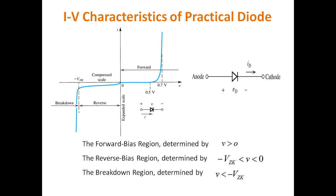Now let's look at the practical VI characteristics. A practical diode does not work ideally. In the forward characteristics, because of the diode's internal resistance, the diode comes into conduction after the cut-in voltage, which is 0.5 volts. As soon as the input voltage exceeds 0.5 volts, the diode starts to conduct and the current increases. In reverse bias, as mentioned, a very small leakage current flows — the reverse saturation current. If the reverse voltage exceeds the breakdown voltage V_ZK, the diode enters the breakdown region.